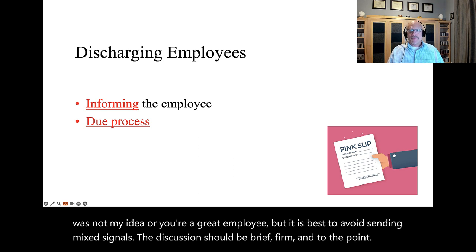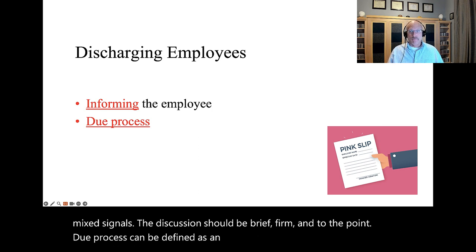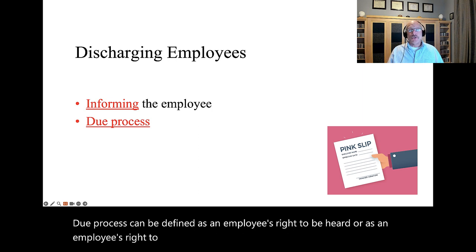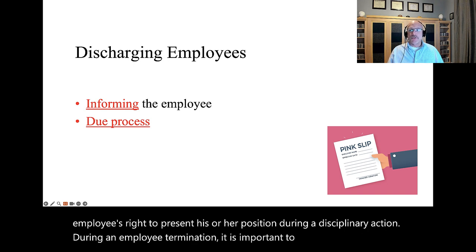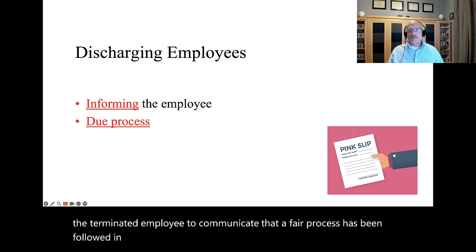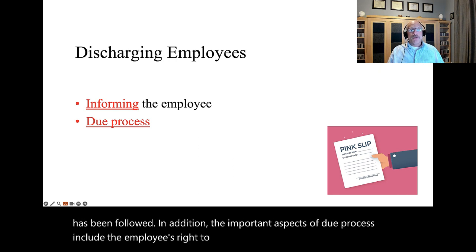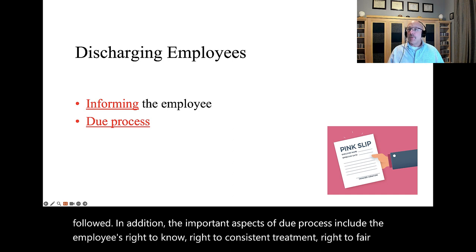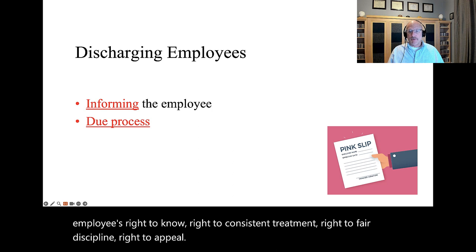Due process can be defined as an employee's right to be heard, or as an employee's right to present his or her position during a disciplinary action. During an employee termination, it is important to provide due process to the terminated employee to communicate that a fair process has been followed. The important aspects of due process include the employee's right to know, right to consistent treatment, right to fair discipline, right to appeal, and right to progressive discipline.